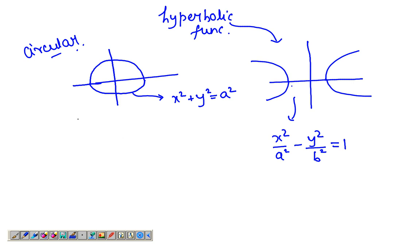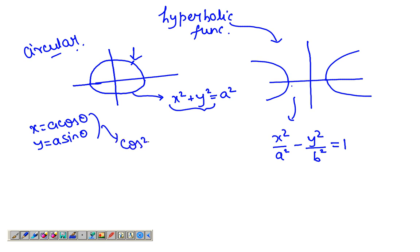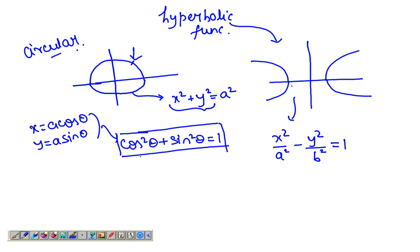The trigonometric circle functions are functions which basically satisfy this equation and form what is known as the parametric coordinates of a circle. So we put x = a·cos(θ) and y = a·sin(θ) into the equation of the circle, and what we get gives us cos²θ + sin²θ = 1. This is known as the fundamental identity of circular functions.